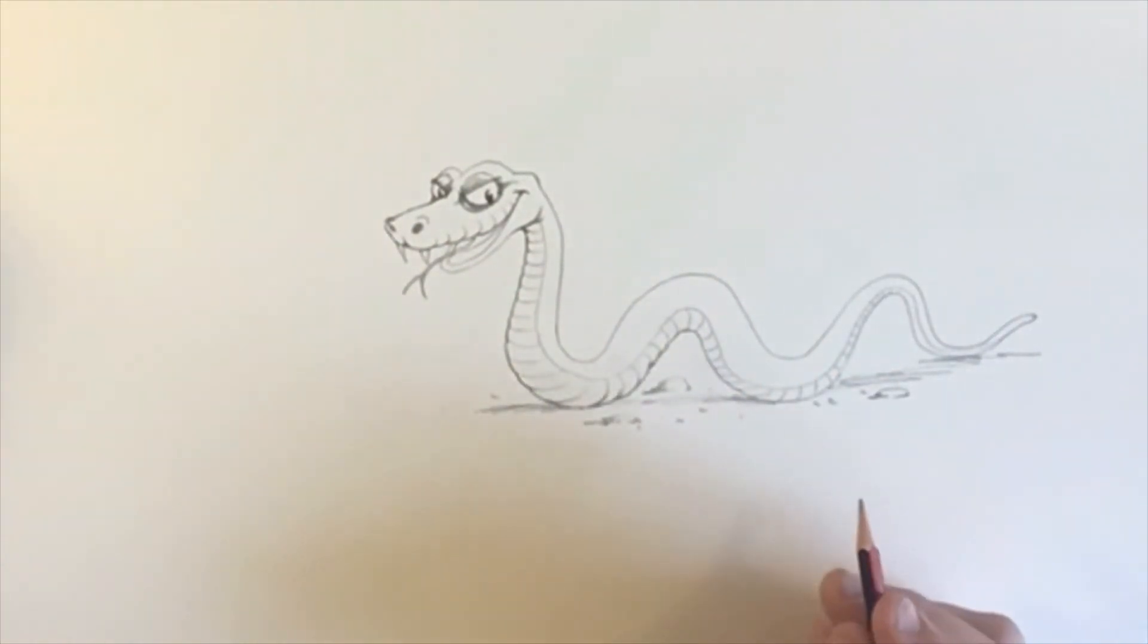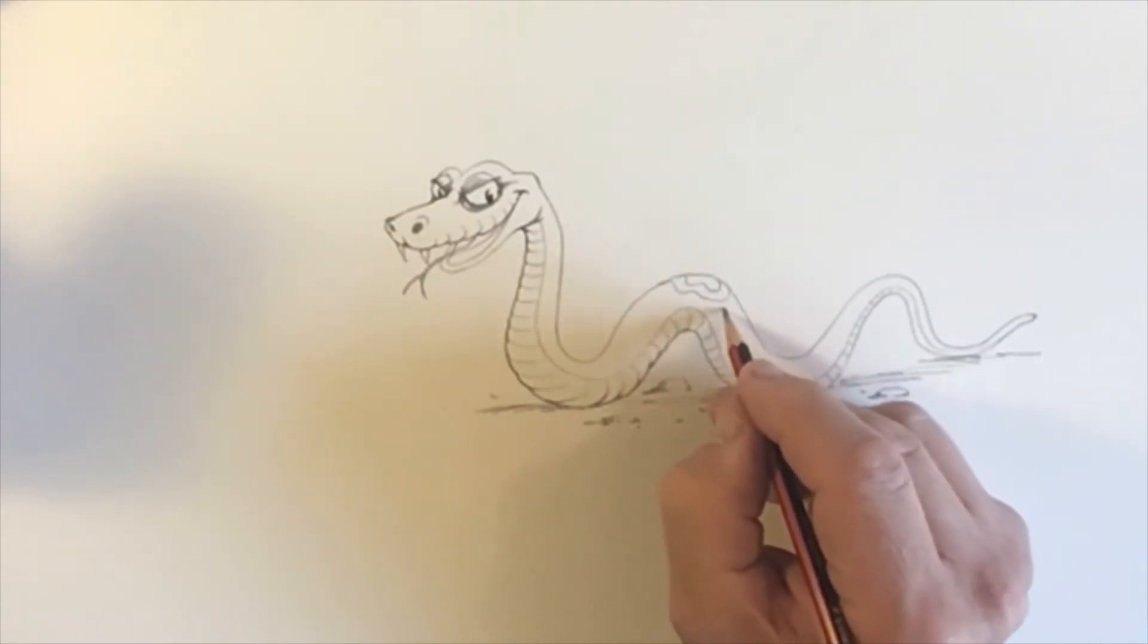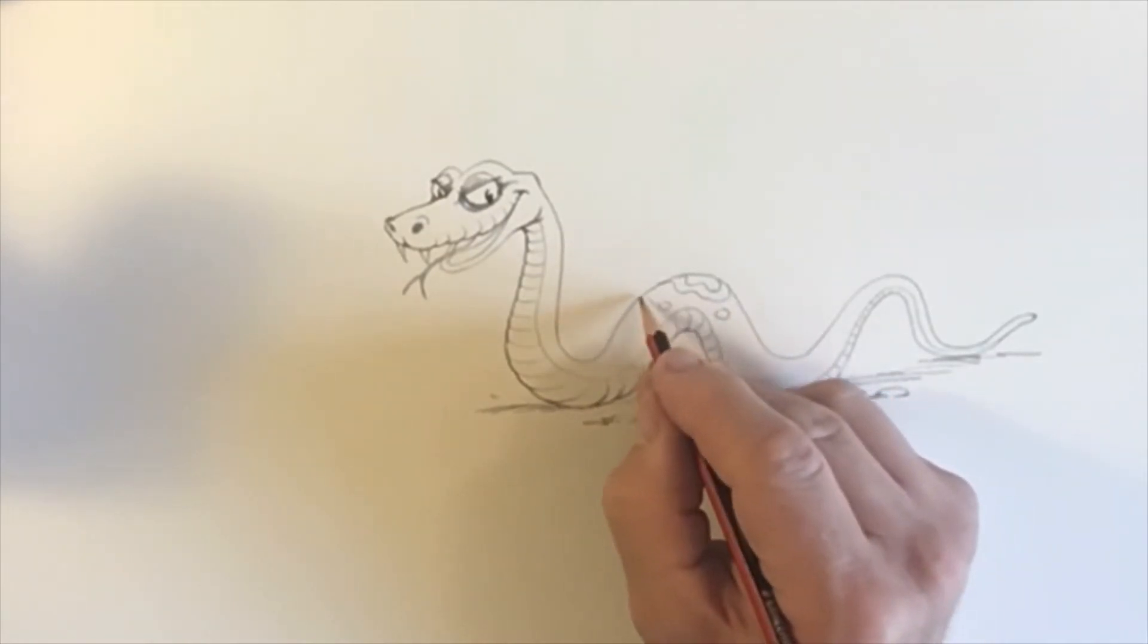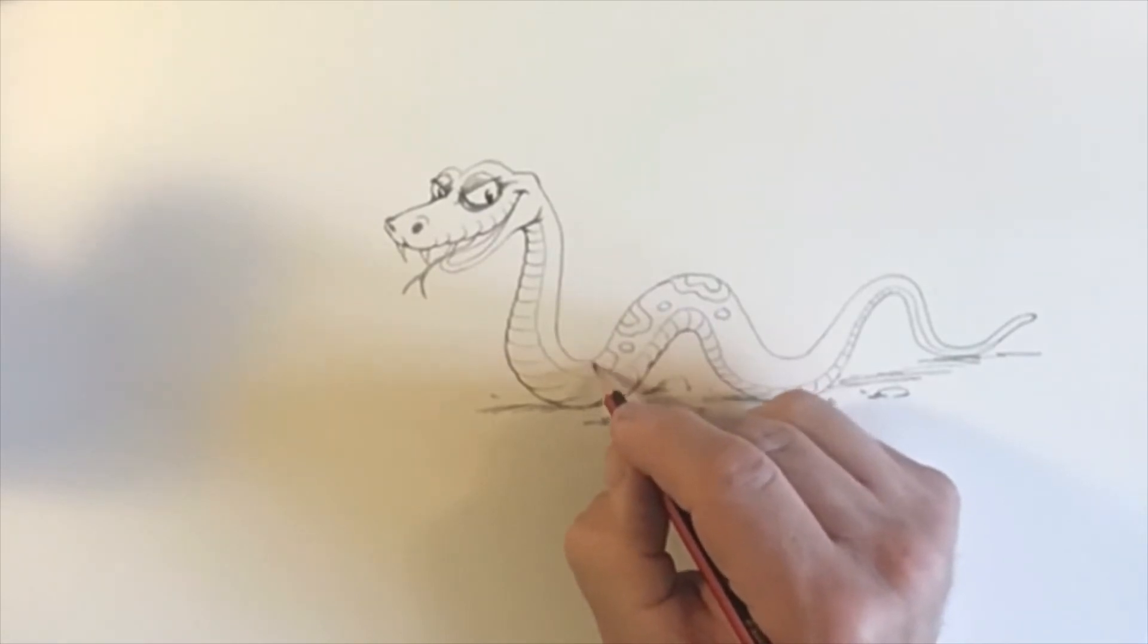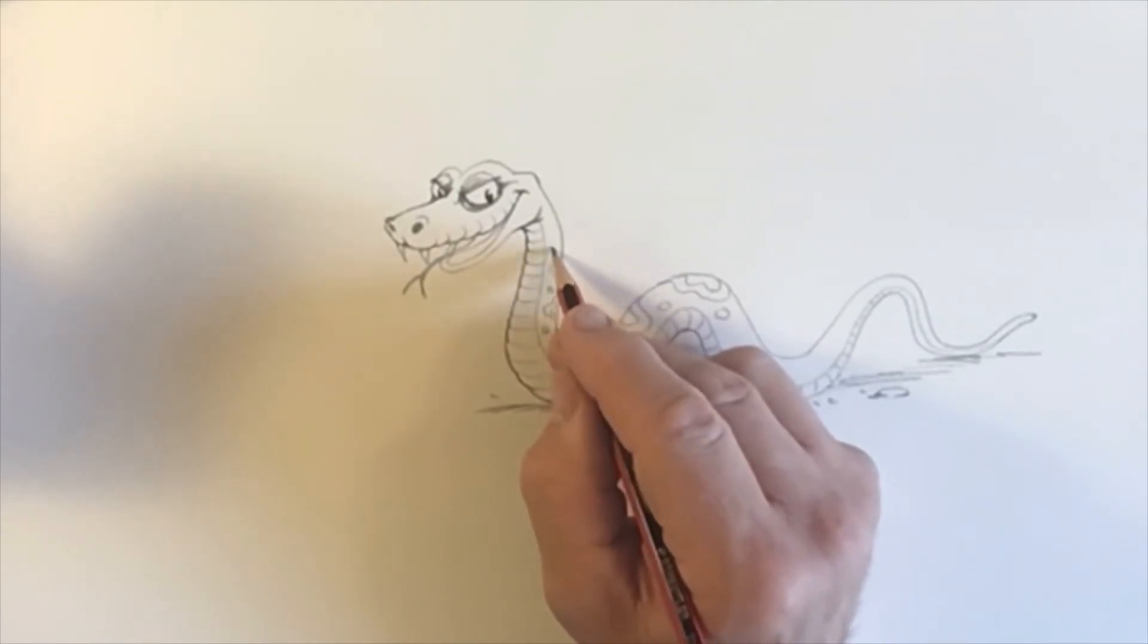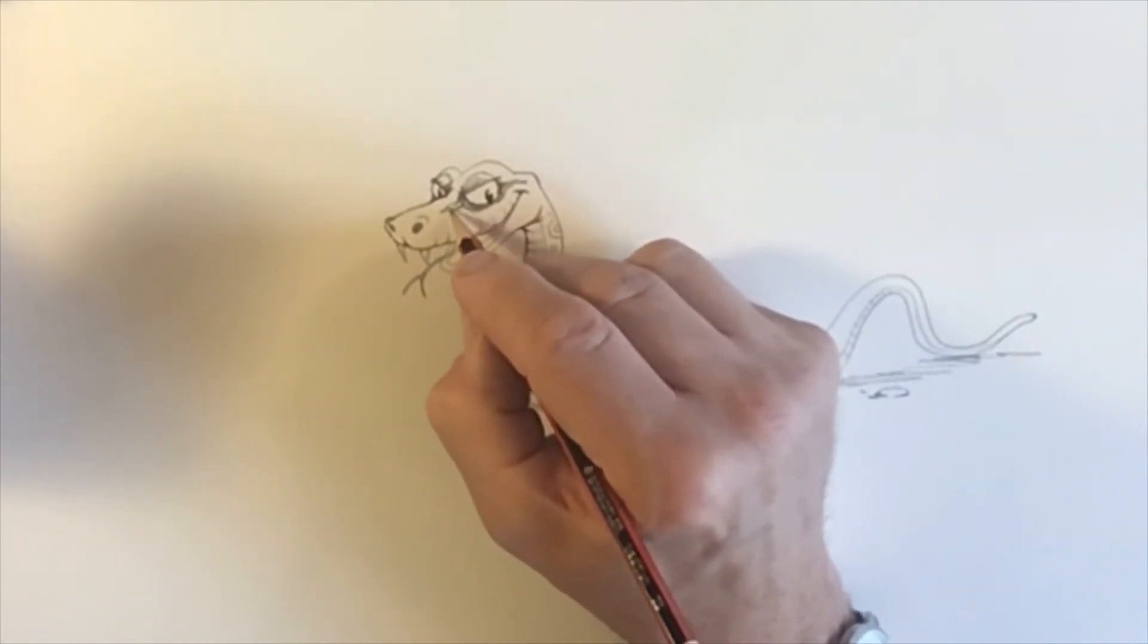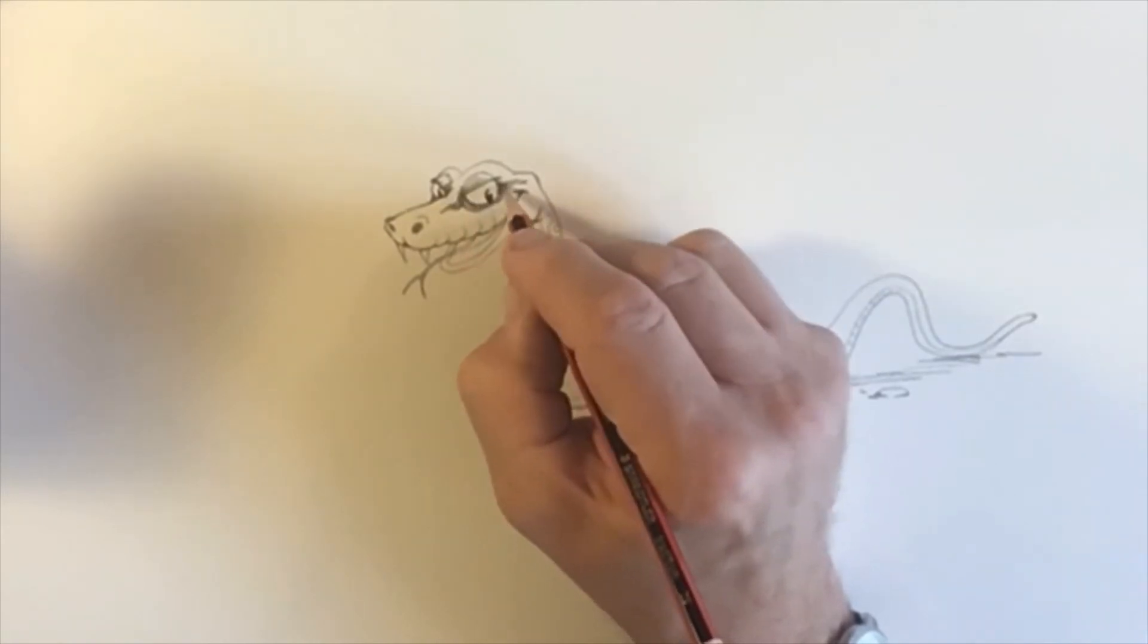And then of course we can have a pattern on the snake. We can have some wiggly shapes like this. Maybe some spots. Yeah, that looks quite snakey, doesn't it? I mean, it's entirely up to you what pattern you want to have on your snake. Sometimes it's nice to give him a sort of quite random pattern. I'm going to do another little bit, black bit around his eye like that.